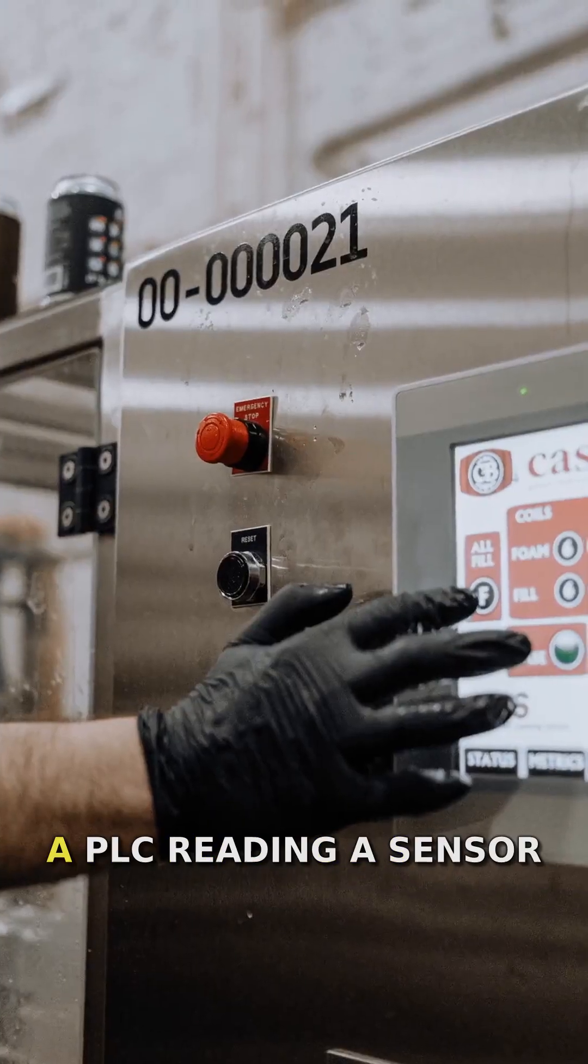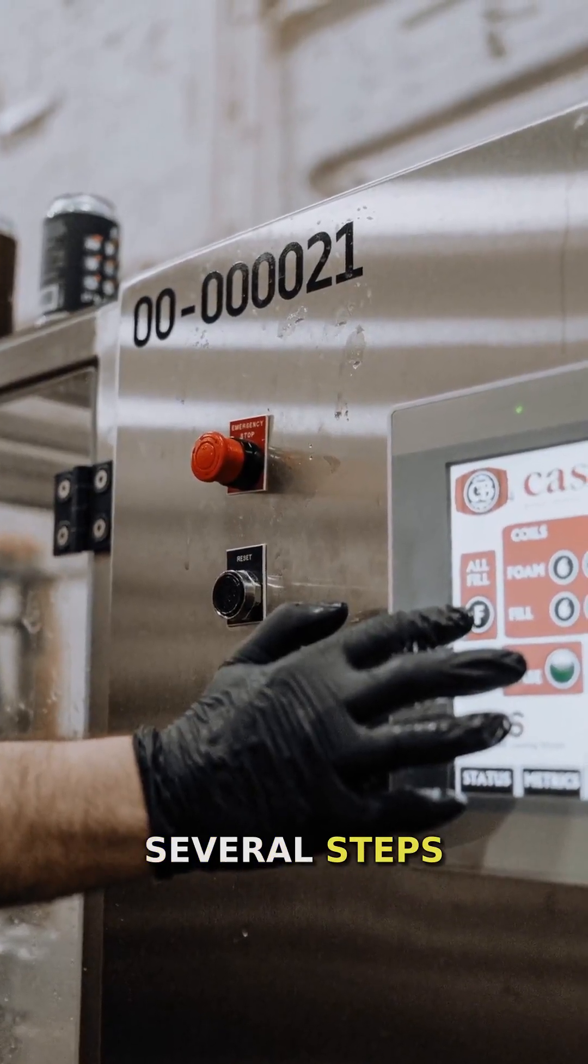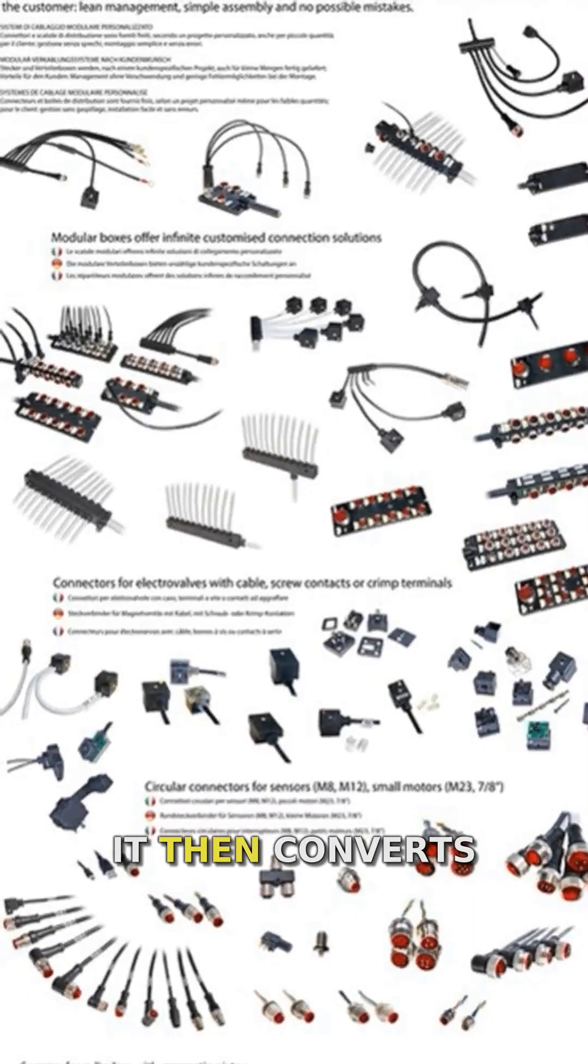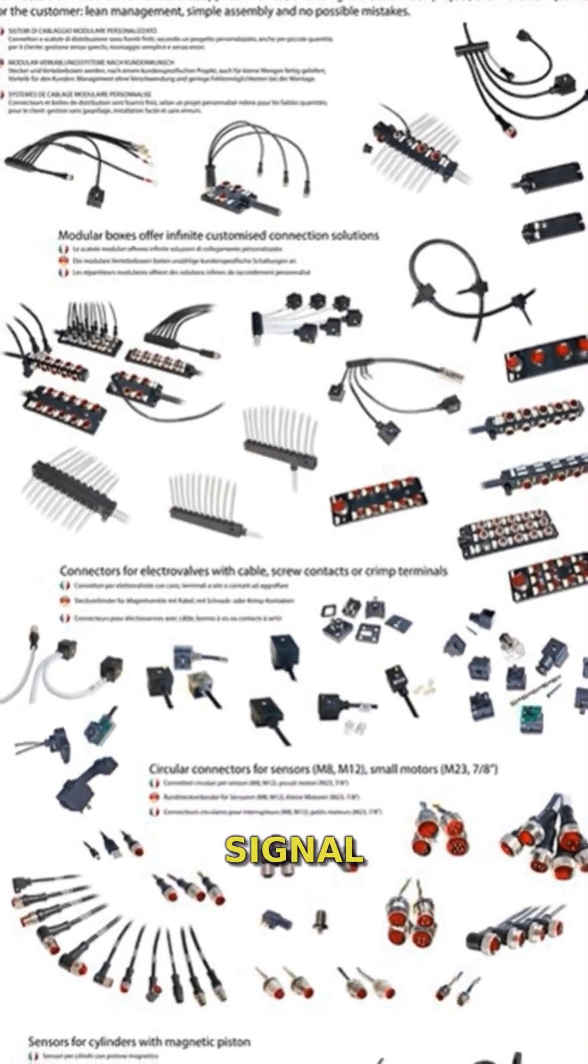The process of a PLC reading a sensor involves several steps. First, the sensor detects a change in its environment. It then converts this physical change into an electrical signal.